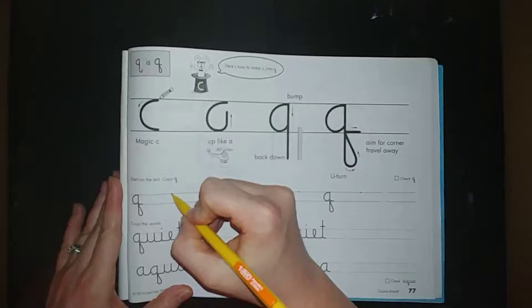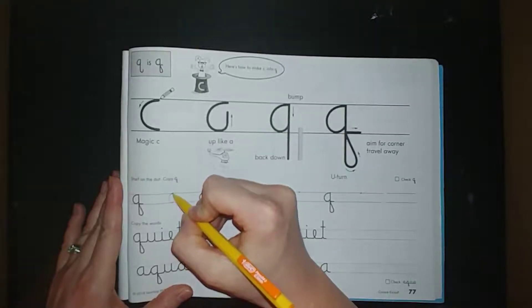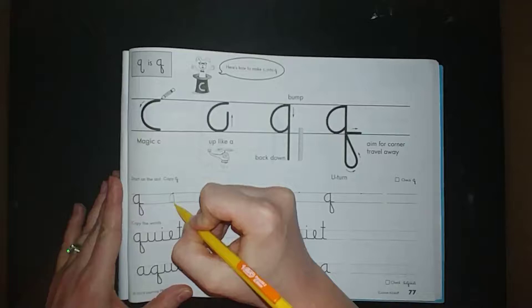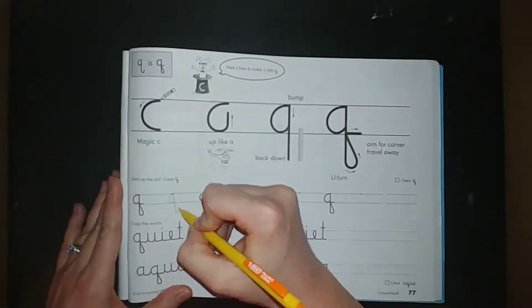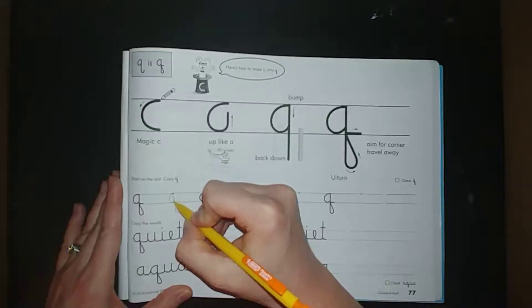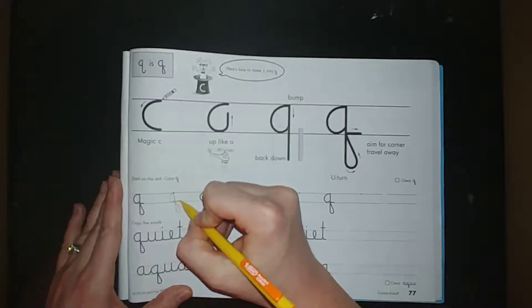Remember start with your magic C. Up like an A. Down below like a G, but don't go that other way like a G. Go this way, aim for the corner, and then travel away.